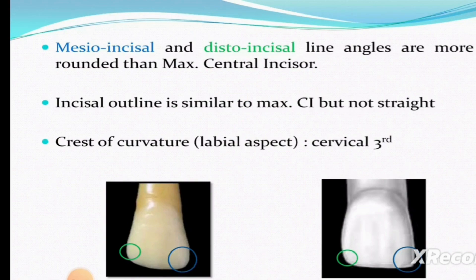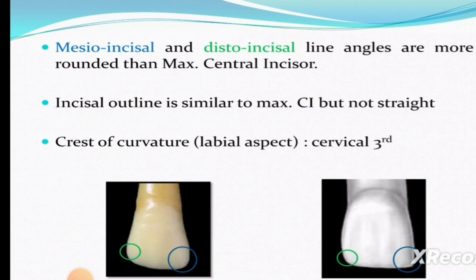You can see that the right side image is the maxillary central incisor and the left side is the lateral incisor. The blue circle highlights that the right side is sharp while the left side is rounded — the distal side is rounded, and the lateral incisor is more rounded. The incisal outline is similar to the maxillary central incisor but not straight; the left side is slightly slanted, with the distal side slightly lower.